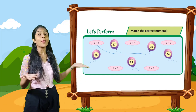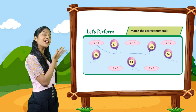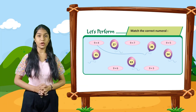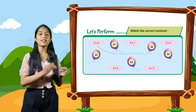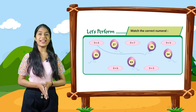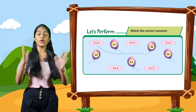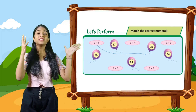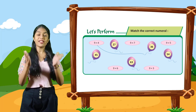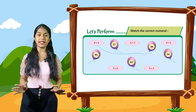So now let's perform. Match the correct numerals. You have to match the correct numerals. First one is already done for you: 9 into 4 that is 36. So you have to match 9 into 4 with 36. Rest you have to do yourself.